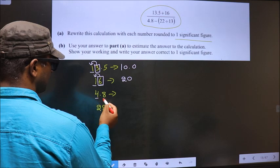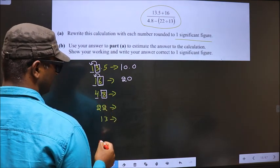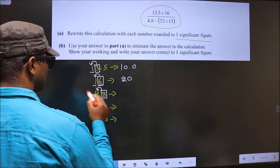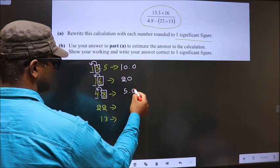Now here, this is the first significant number and this is the second significant number which is 8. Greater than 5. So we should add 1 to this. Making it 5. And in rest of the place, 0.